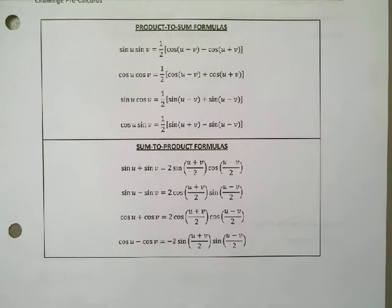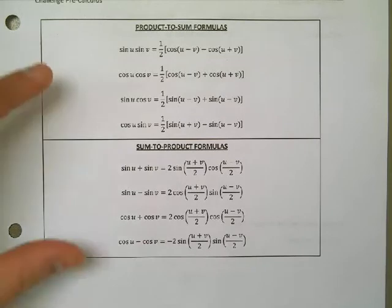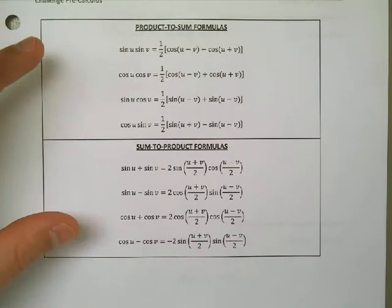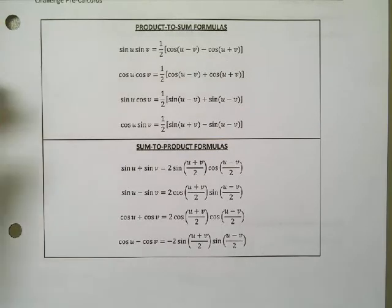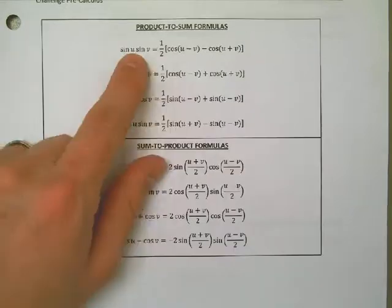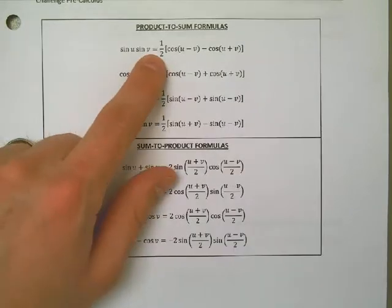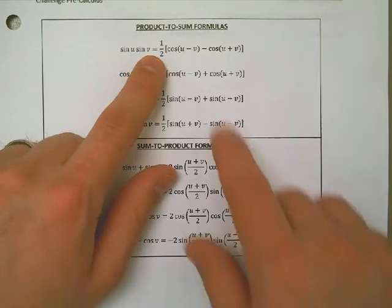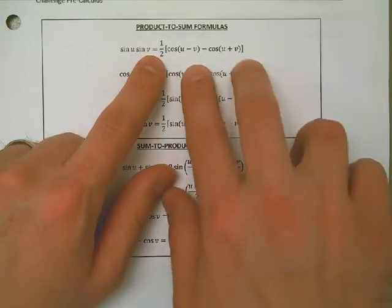Okay, in this video we're going to talk about the product-to-sum and sum-to-product formulas, both of which you see here. Both probably look pretty terrible to be honest, but remember that our goal when we're working with these is really just to identify two things: What is U and what is V? And if we can figure out what U is and what V is, then it's just a matter of plugging things into the formula.